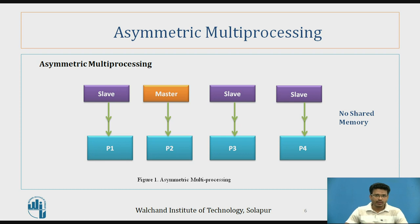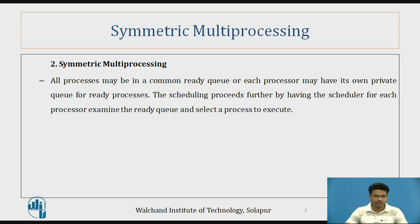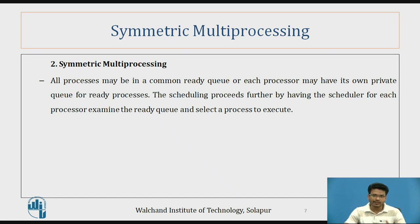In symmetric multiprocessing, all processes may be in a common ready queue, or each process may have its own private queue for ready processes. The scheduling process proceeds by having a scheduler for each processor examine the ready queue and select a process to execute. Each processor has its own memory and its own queue for task execution, and the scheduler takes charge of scheduling the different processes.